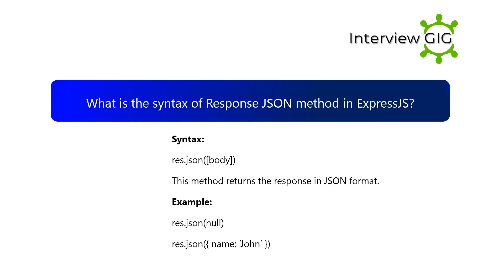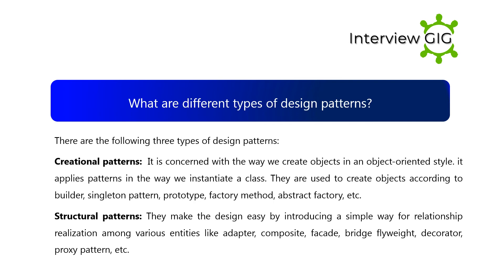What is the syntax of the response JSON method in Express.js? Syntax: res.json(body). This method returns the response in JSON format. Examples: res.json(null), res.json({ name: 'John' }).